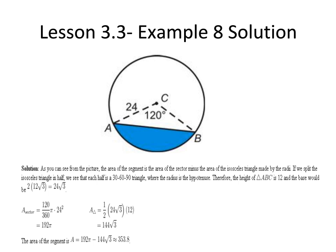Looking at the figure we can see that the area of the blue segment is the area of the sector minus the area of the isosceles triangle formed from the radii of the circle.